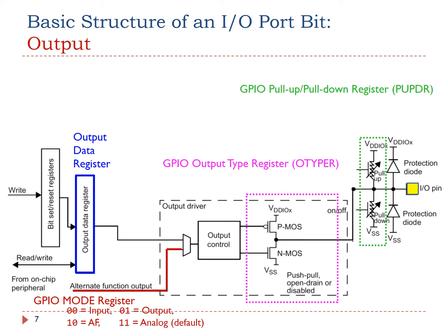We can use the mode register to configure the pin as output. The output type register sets the output pin as either push-pull or open-drain. The pull-up pull-down register specifies whether the pin is pulled up to a high voltage by a resistor or the pin is pulled down to the ground via another resistor.